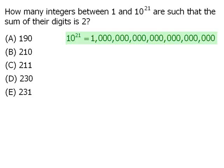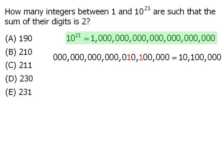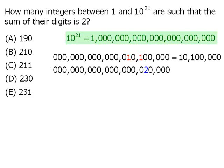And we'll do this by including several leading zeros of a number. So, for example, we can write 10,100,000 as a 21 digit number by including several leading zeros. Similarly, we can write 20,000 as a 21 digit number.